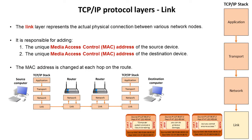Finally we pass down to the link layer, sometimes called the physical layer or layer 1. It's the lowest layer of the model and represents the actual physical connection between the various nodes. This layer is responsible for adding the MAC addresses — it adds a source MAC address and a destination MAC address, and again wraps this information around everything else. These packets can now be sent off.